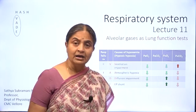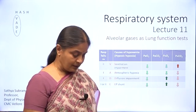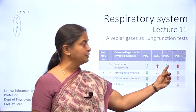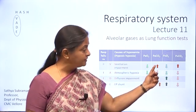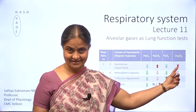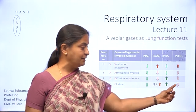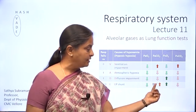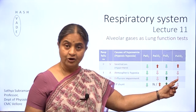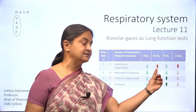Likewise, alveolar carbon dioxide can be a very useful lung function test too. Unlike arterial oxygen, which will always be lower than alveolar oxygen, arterial carbon dioxide is always equal to alveolar carbon dioxide. This is a very important concept in respiratory physiology. Except in extrapulmonary shunt, where arterial and alveolar carbon dioxide may be different, the two are identical in all other clinical situations. Therefore, you could use either one as a surrogate for the other.